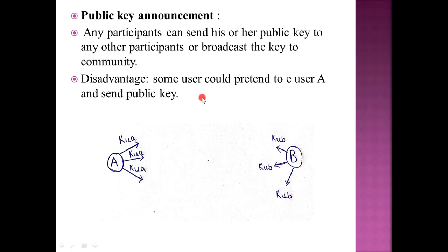The disadvantage of public key announcement is that some user could pretend to be another user. For example, if you have a message and you encrypt it for a third party, you may not be able to verify the actual sender. A forged public key announcement is a significant weakness of this approach.